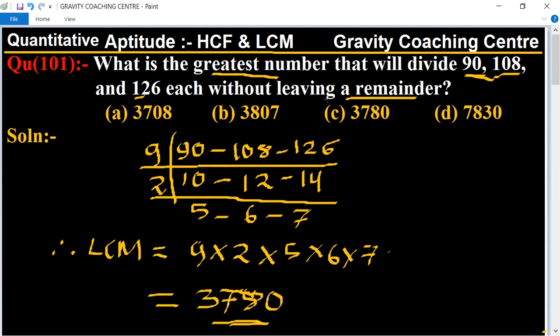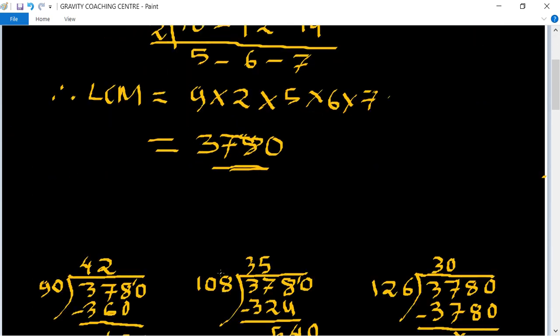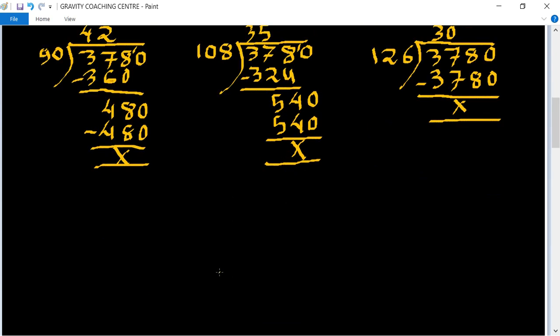all three numbers with no remainder. Now we will check. First divide by 90, remainder is zero. In all three cases, remainder